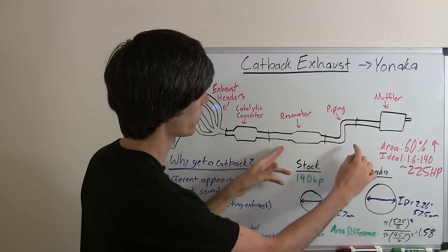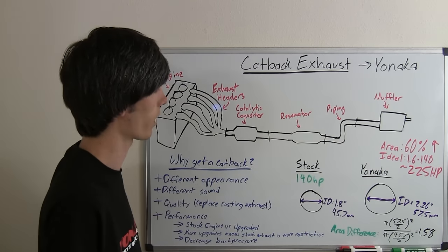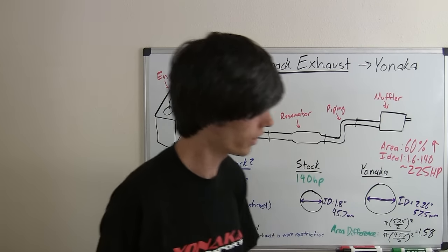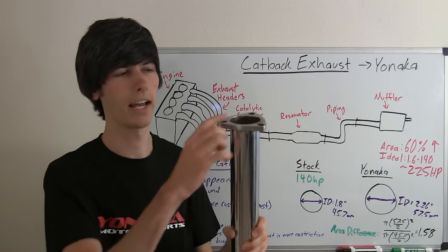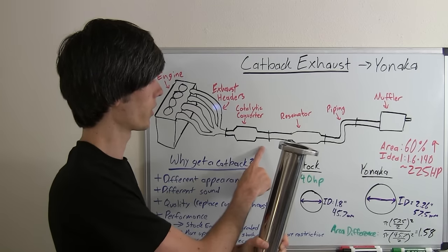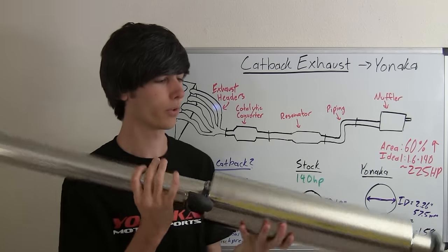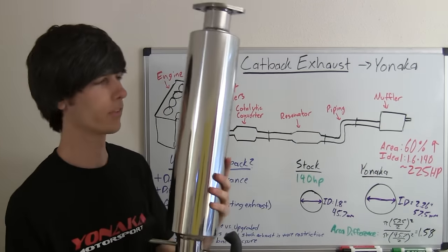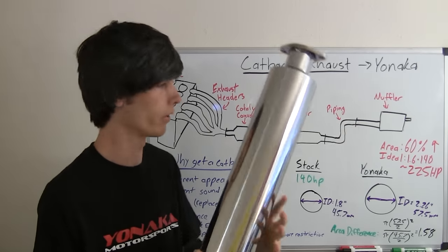So we've got a resonator, additional piping, and a muffler. The resonator attaches here to the catalytic converter, travels through this piping and then goes through the resonator, which will cancel out some of the noise.